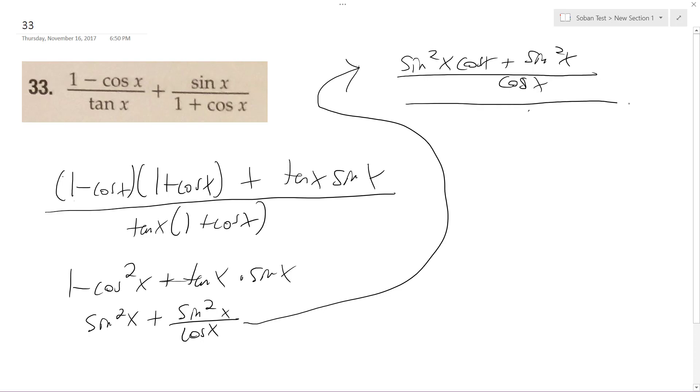All right, and then this is all over tangent x plus sine x because it cancels out the sine over cosine. Oh wait, never mind. Yeah, it does, sine over cosine, so I get sine of x.